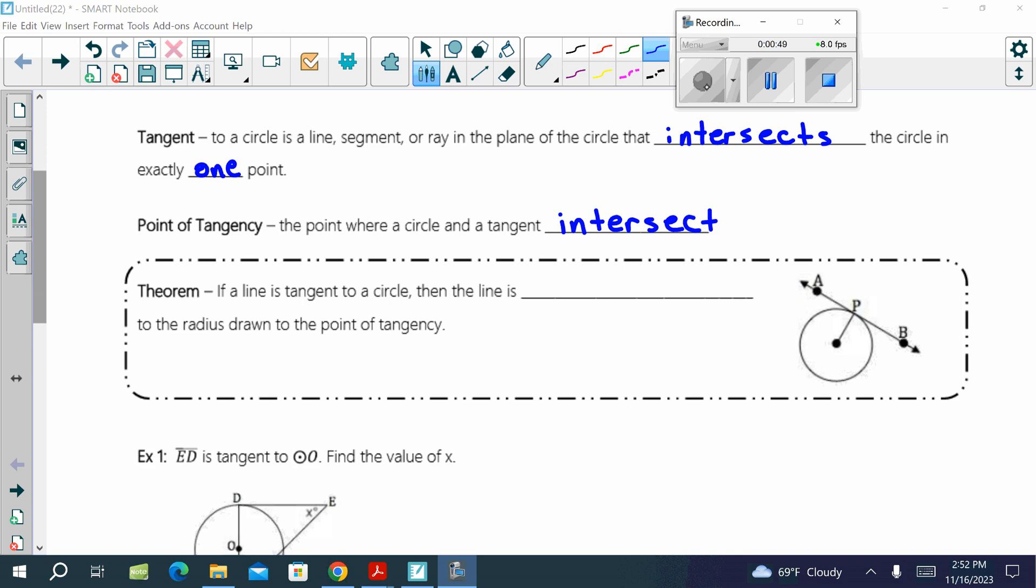So the first theorem: if a line is tangent to a circle, then the line is perpendicular to the radius drawn to the point of tangency. So we've got line AB is our tangent line, and that's going to be perpendicular to the radius. So we can draw a right angle in there on either side.